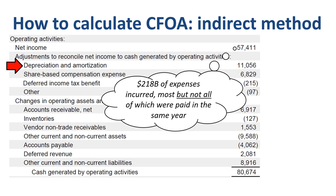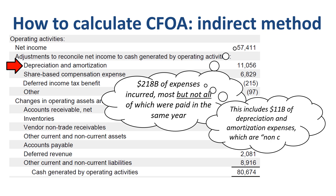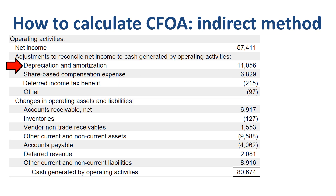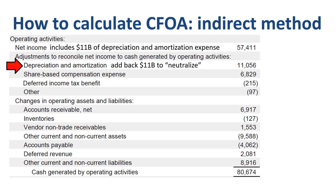Depreciation and amortization: the $218 billion of expenses incurred includes $11 billion of depreciation and amortization expenses, which are so-called non-cash expenses — expenses are recorded but no cash is changing hands. The cash outflow occurred when the assets were purchased. Recording D&A expense simply transfers part of the asset's value from the balance sheet to the income statement over the years of use. When converting from the profit view to the cash flow view, you must neutralize the effect: if net income is $57 billion after deducting $11 billion of D&A, you add back $11 billion in CFOA. Minus $11 billion plus $11 billion sums to zero.